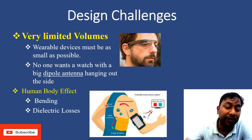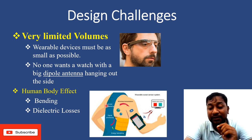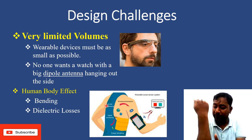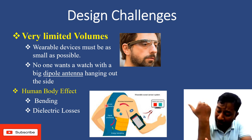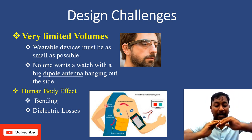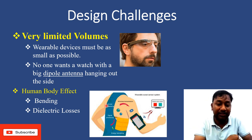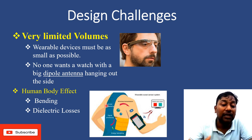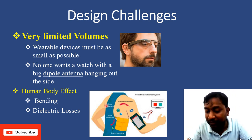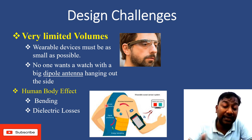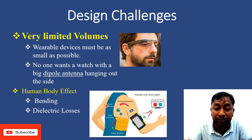Another problem with wearable antennas is that the human body has different diameters and bending characteristics — the curvature of the body differs across regions. Before designing an antenna, we should think about which purpose and which particular body area it will be used for, and then validate the wearable antenna for that specific body area. Those are the key design challenges when trying to design a wearable antenna.